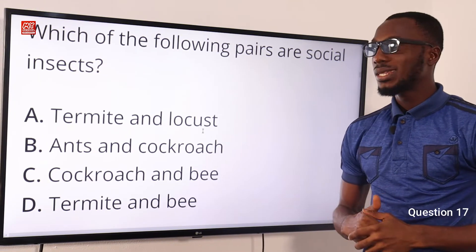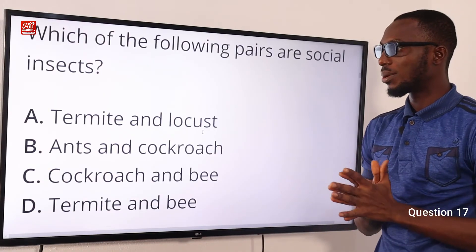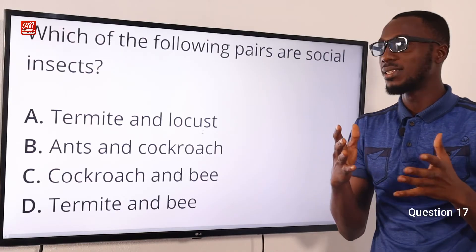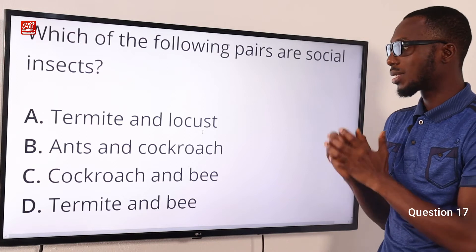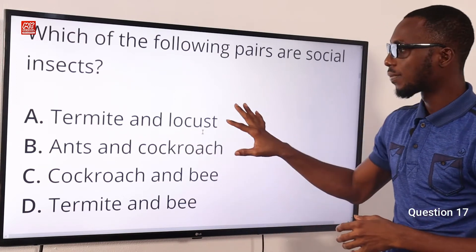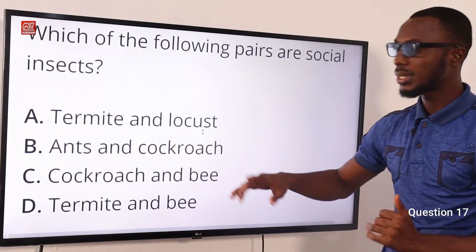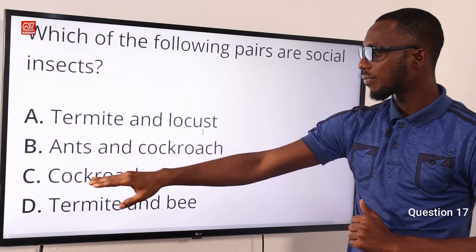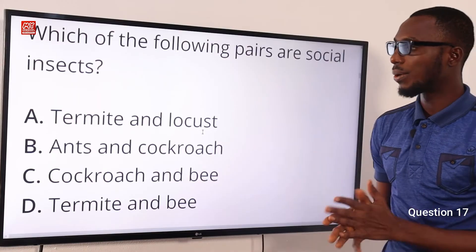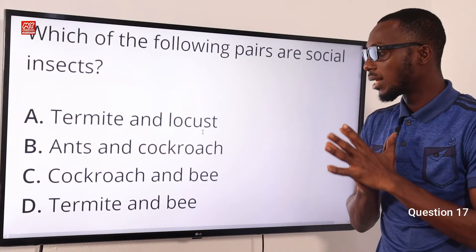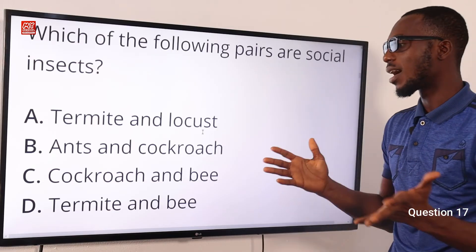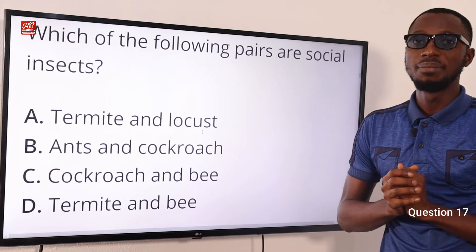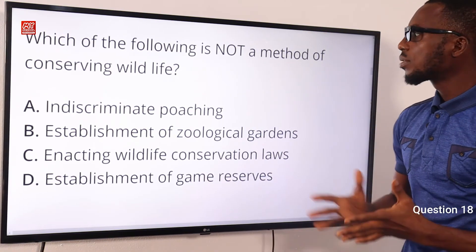Question 17: Which of the following pairs are social insects? Social insects live in societies with a caste system where each individual has a defined role. Termites are social insects but locusts are not — so that pair is incorrect. Ants are social insects but cockroaches are not — so that pair is incorrect. The correct pair is D: termites and bees. Other social insects include ants and wasps.